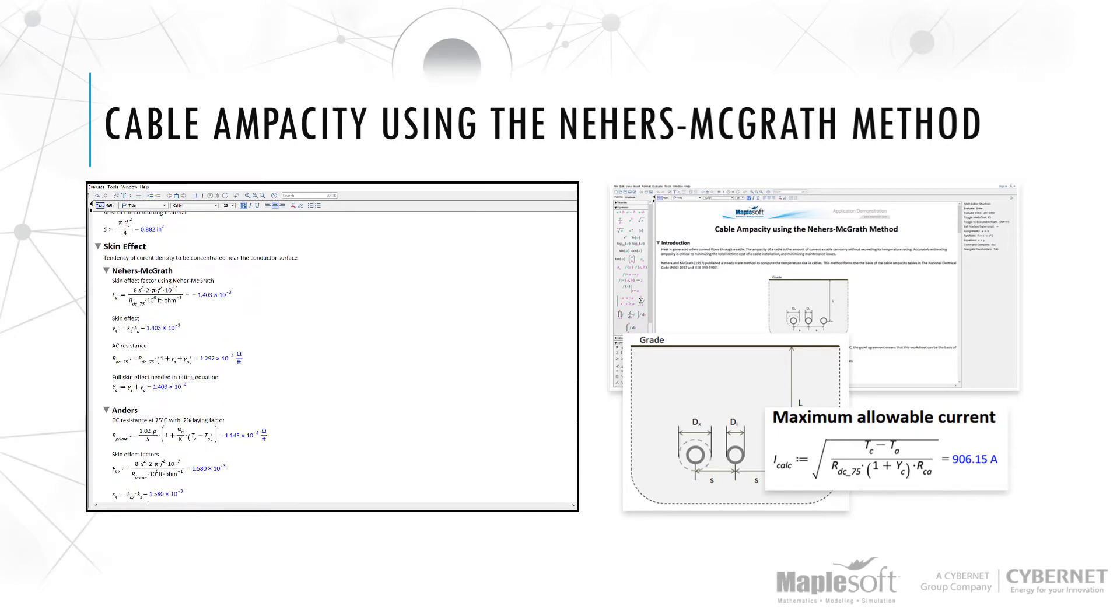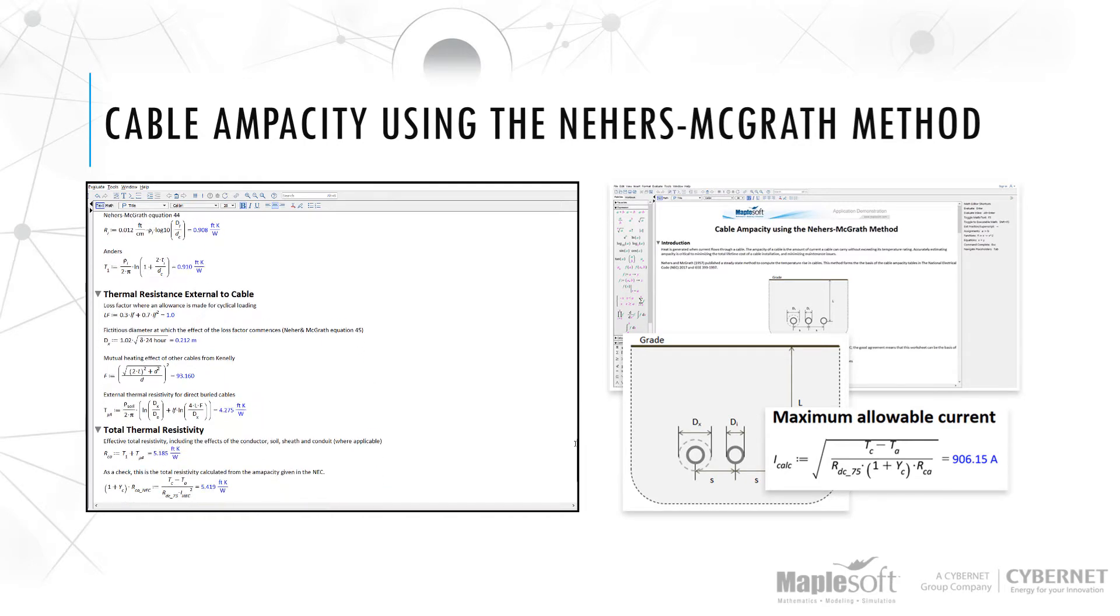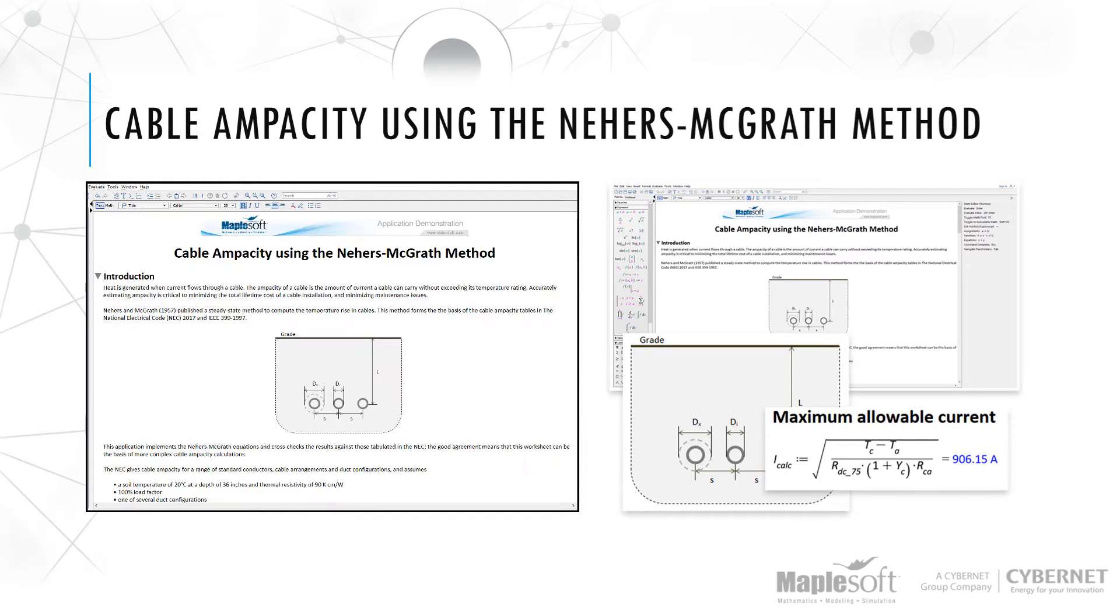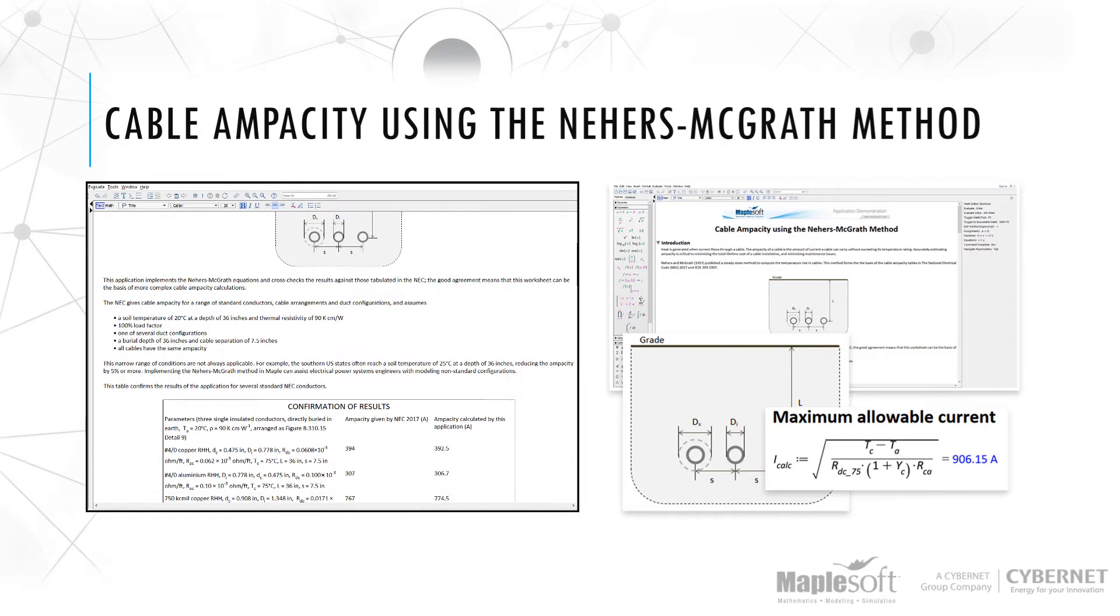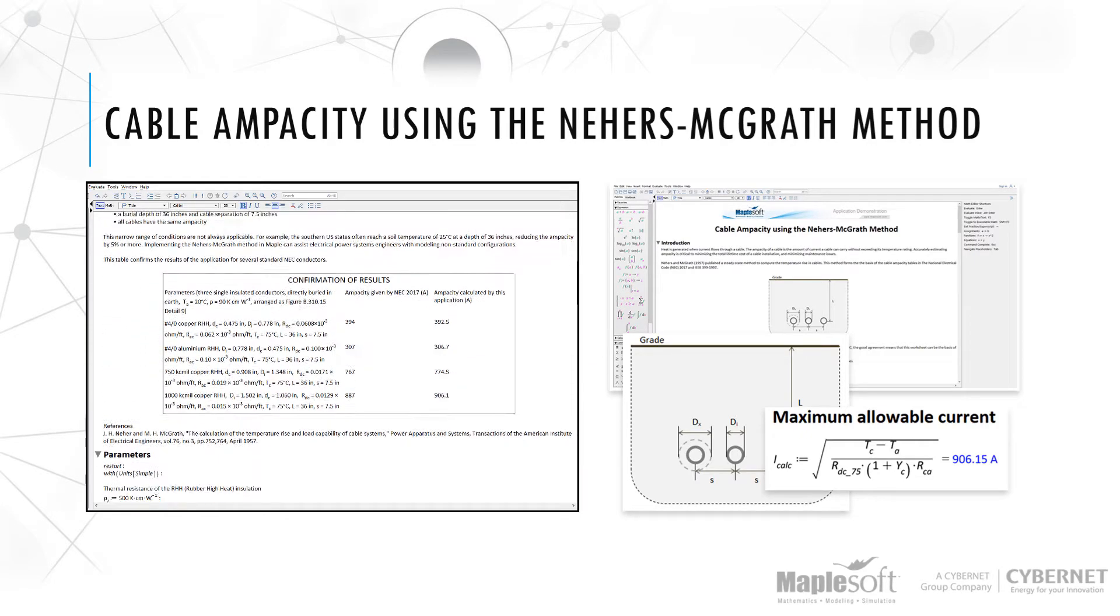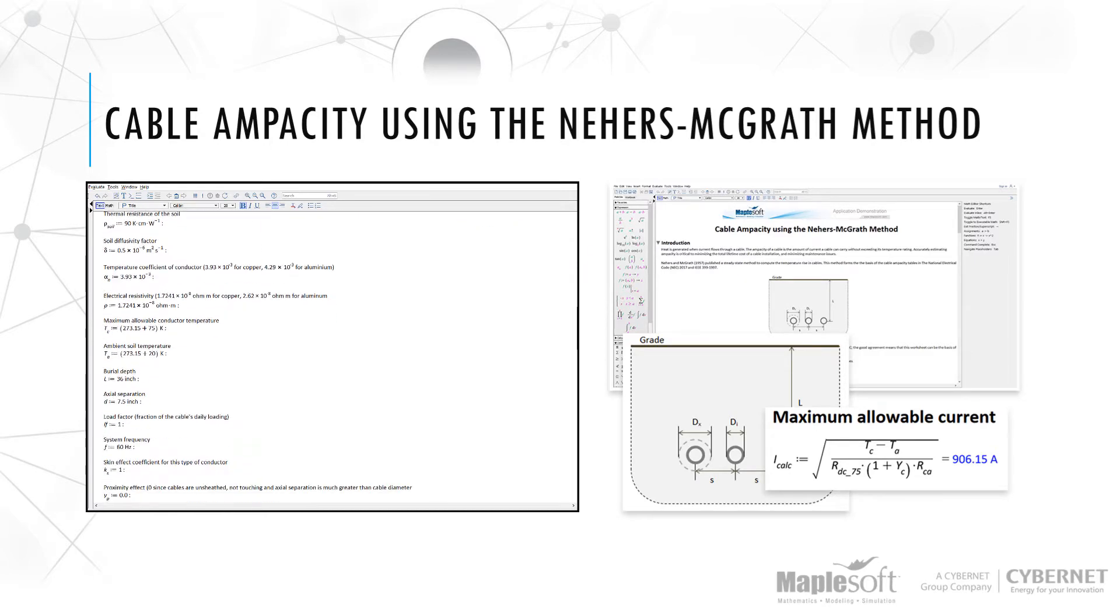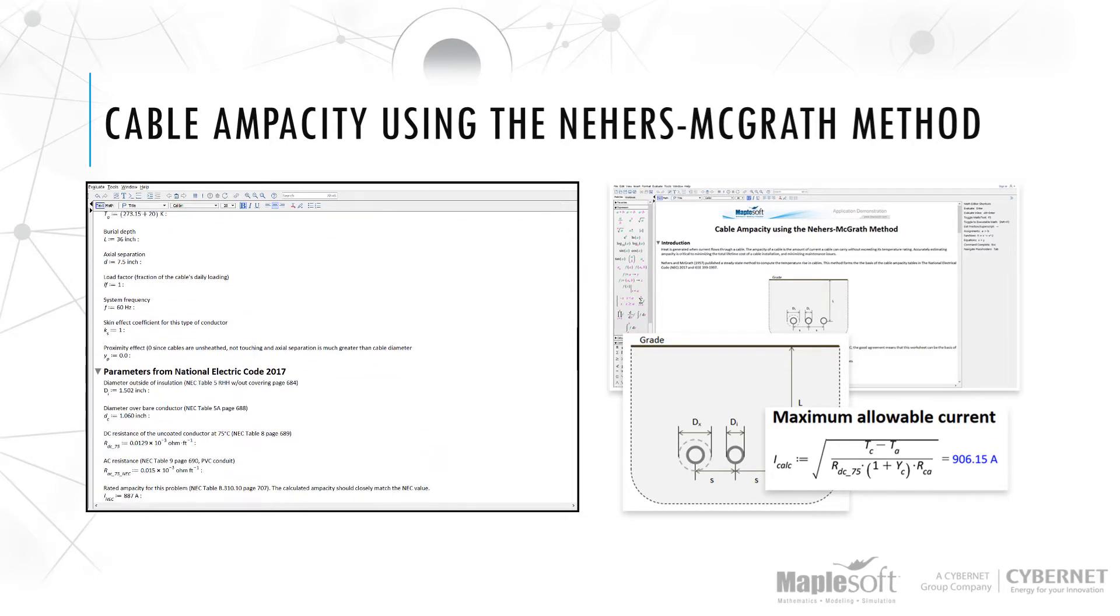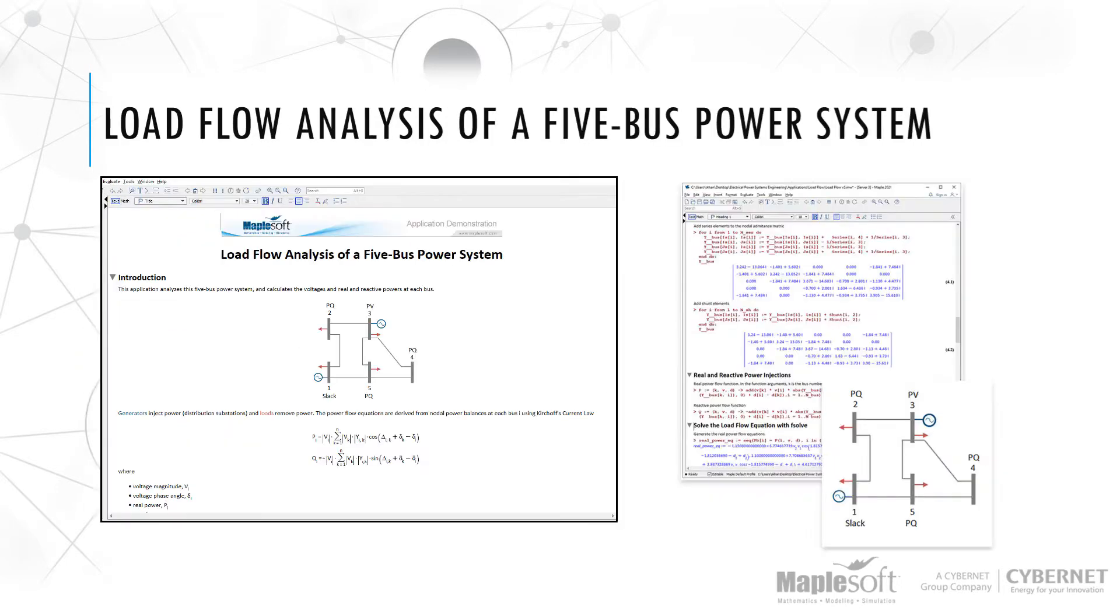This application implements the Nayer's McGrath equations and cross-checks the results against those tabulated in the National Electrical Code. The good agreement means that this worksheet can be the basis of more complex cable ampacity calculations using numeric and symbolic techniques. This application uses Maple's built-in unit system to show standard units throughout the calculations.